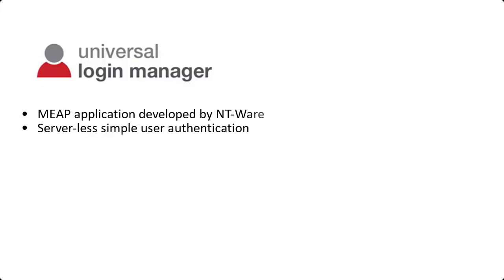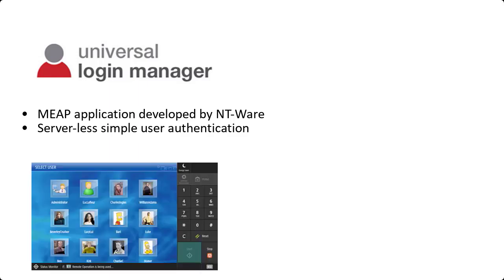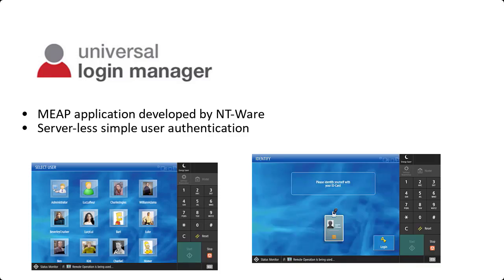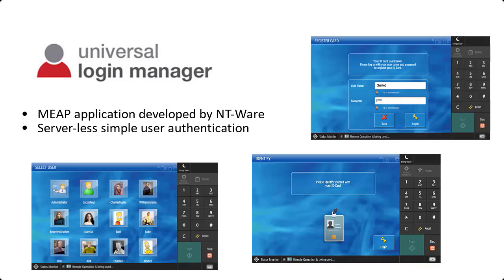Universal Login Manager, or ULM, is a MEEP application developed by NTWare for ImageRunner Advanced devices that provides server-less simple user authentication. Authentication methods that can be configured are image login, image login with PIN code, card login, card login with PIN, or username and password. It can also be configured to authenticate against a customer's Active Directory. ULM can also work with the Access Management System, or AMS, of the ImageRunner Advanced devices for granular control of access per user.